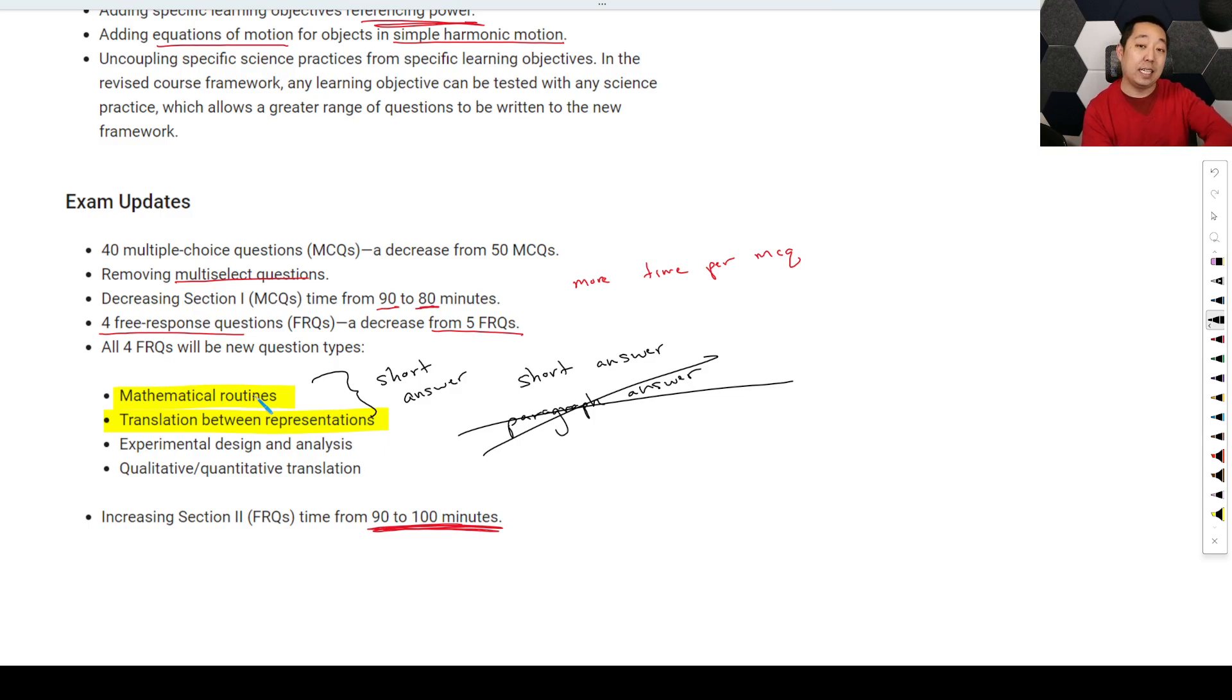Mathematical routines is going to be a kind of a derivation-related one. And, like I said, I'm going to dig into that in a separate video, the details on each of the FRQ styles. And I'm going to be adding that into my curriculum, to the free curriculum, to explain what are the different FRQ styles and how to prep for them. And the translation between representations, this is one where you're going to be doing a lot of graphing, as well as equations. Like, you're making sure you understand the equation, the graphing, sketches, that kind of thing. That's what they mean by translation between representations there.